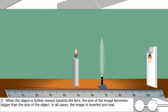3. When the object is further moved towards the lens, the size of the image becomes bigger than the size of the object. In all cases, the image is inverted and real.